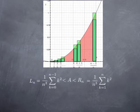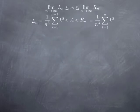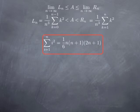If we pass to the limit when n goes to infinity, the area a is going to be between the two limits. So now we want to calculate these limits to conclude something about a. Both Lₙ and Rₙ are expressed in terms of the sum of consecutive squares of integers. We have seen in the previous video that the sum of the first n consecutive squares is 1/6 of n times (n+1) times (2n+1).